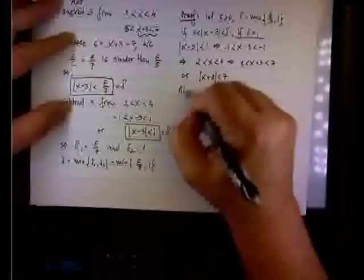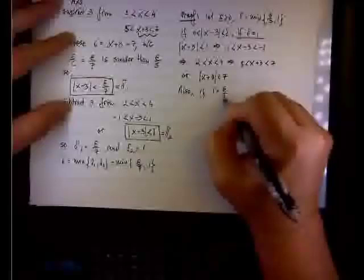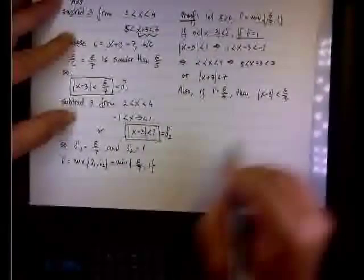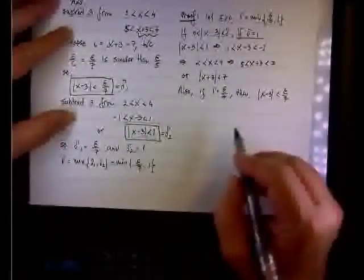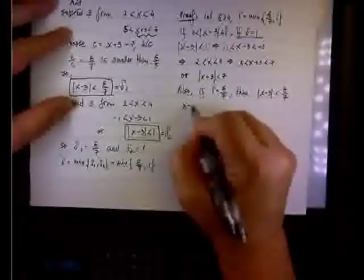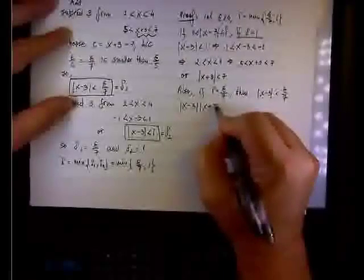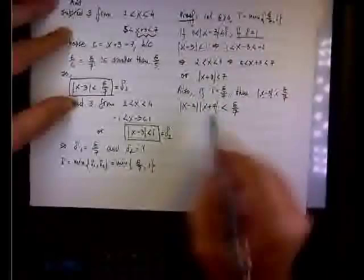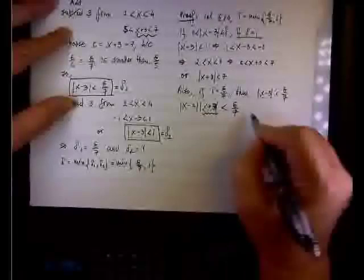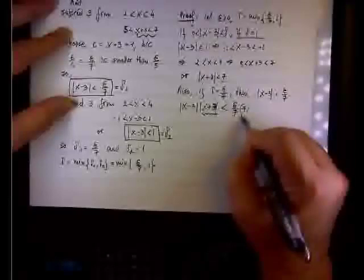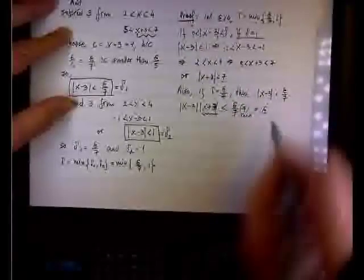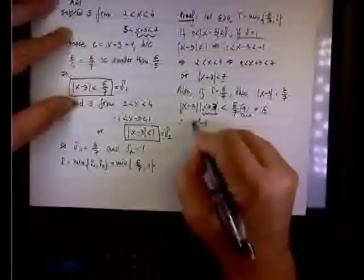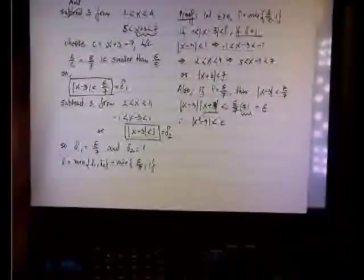Also, if delta equals epsilon over 7, then the absolute value of x minus 3 is less than epsilon over 7. We multiply both sides by the absolute value of x plus 3: the absolute value of x minus 3 times the absolute value of x plus 3 is less than epsilon over 7 times 7. Since x plus 3 is less than 7, the product gives us the absolute value of x squared minus 9, and the right side equals epsilon. That concludes the proof.